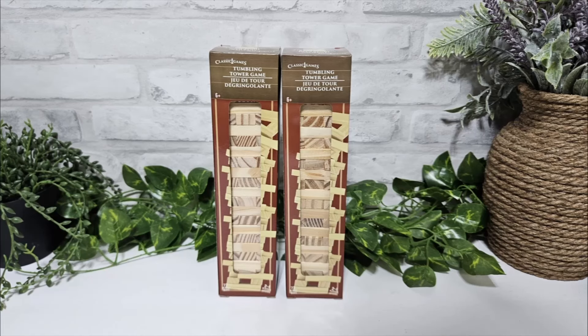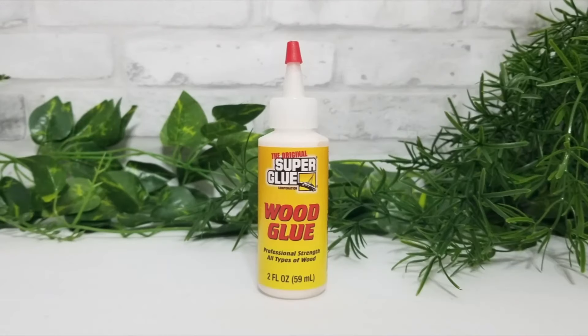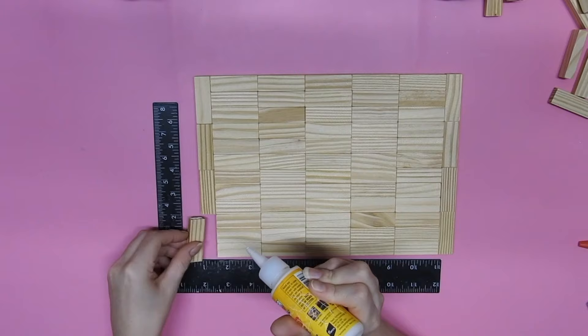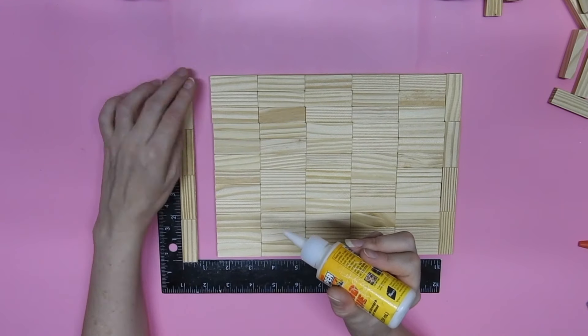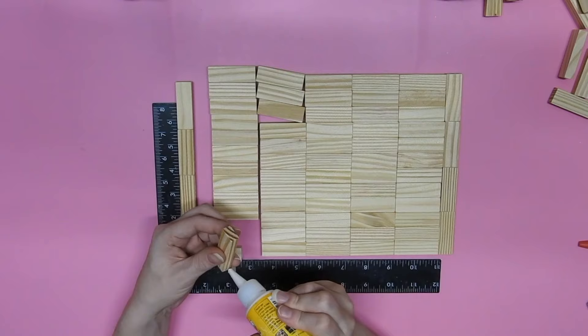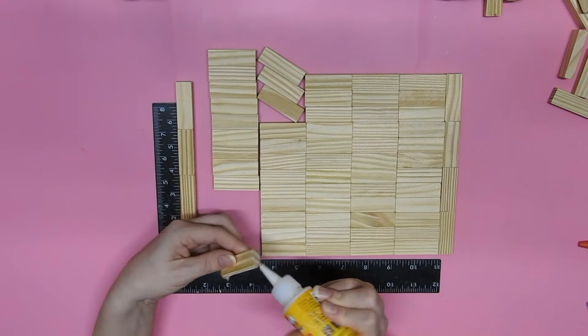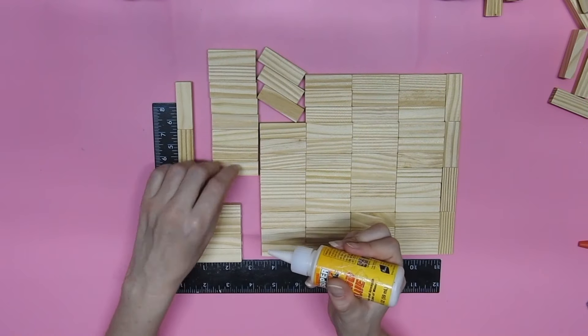You need 104 blocks for this DIY which is two boxes and some wood glue. And I'm gluing together four tower blocks on either side end to end and then five rows of 12 blocks.